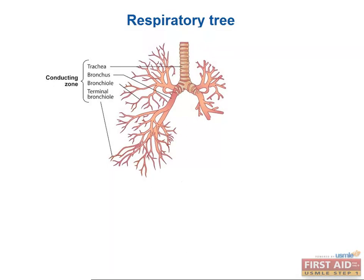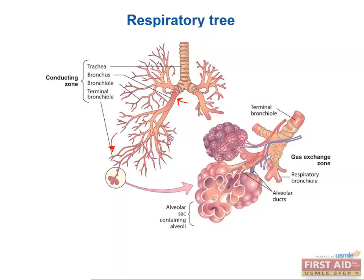Histologically, what might you expect to see at the end of the bronchi? Cartilage and goblet cells. What's beyond that? The terminal bronchioles, with pseudostratified ciliated columnar cells and smooth muscle. The respiratory zone is made up of respiratory bronchioles, alveolar ducts, and alveoli. It's the part of the lung where gas exchange occurs and, as we'll discuss later, it's a major site of pulmonary pathology.